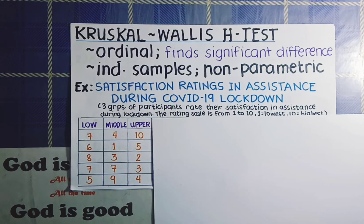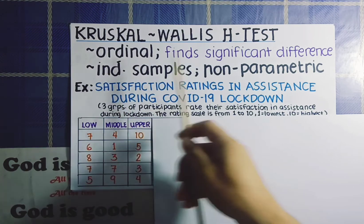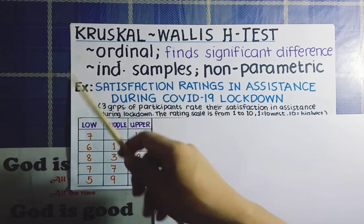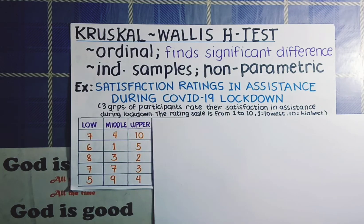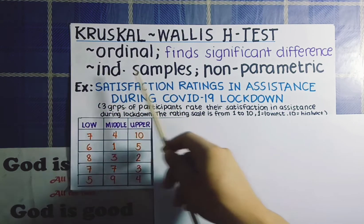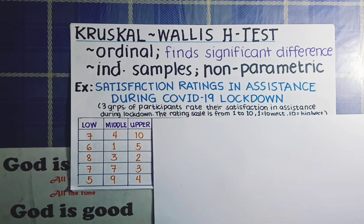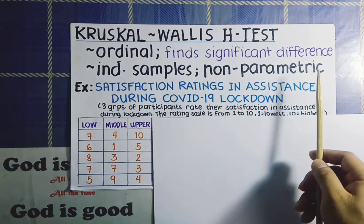Hi, good day. For today, we are going to talk about the Kruskal-Wallis H Test. The Kruskal-Wallis H Test is another way to find the significant difference between three or more groups of data that came from independent samples. Unlike the one-way ANOVA, the Kruskal-Wallis H Test can only be used if our data are not normally distributed, and therefore it is a type of non-parametric test.